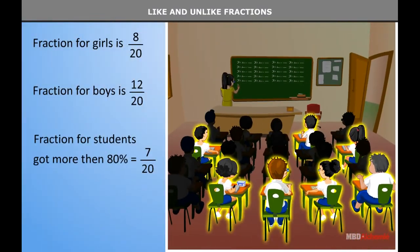Now, 7 students got numbers more than 80%. Then what will be the fraction for these students? It's 7 by 20. This is also a like fraction for the earlier 2 fractions.